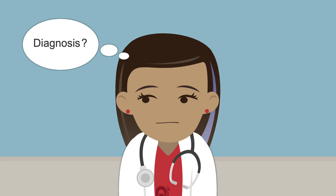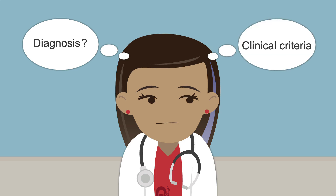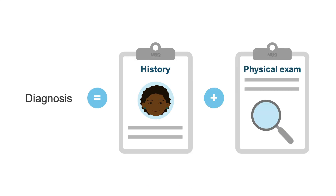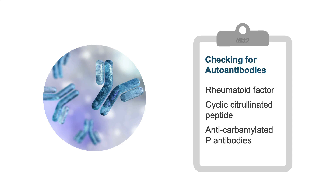In terms of diagnosis, there are clinical criteria you can use as a guide, but a detailed history and physical examination are always fundamental. Checking for autoantibodies like RF, CCP, or the newest biomarkers — anticarbamylated protein antibodies and 14-3-3-eta protein — are helpful. But keep in mind that not all patients with positive markers have rheumatoid arthritis, and people can have RA with negative blood tests as well.